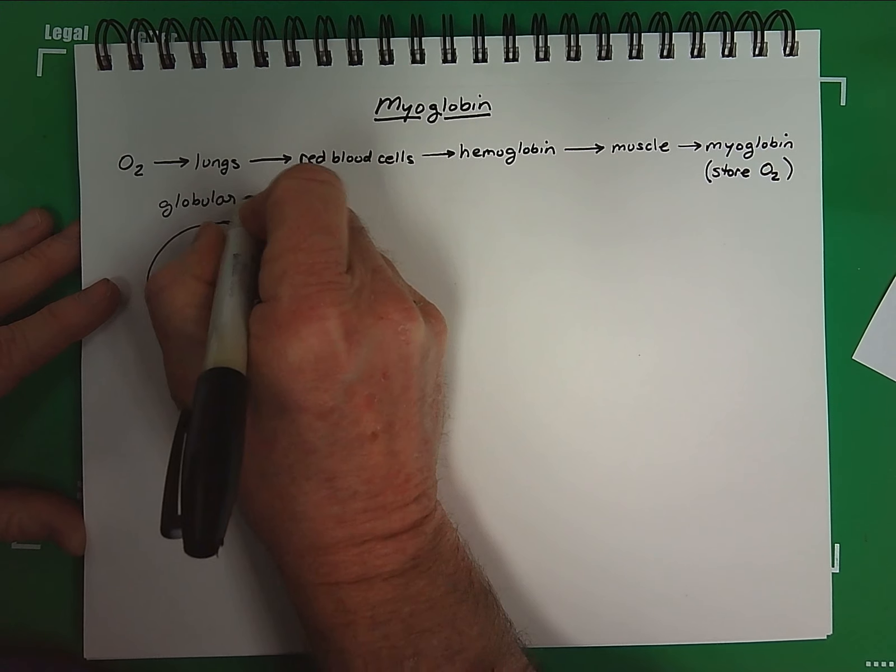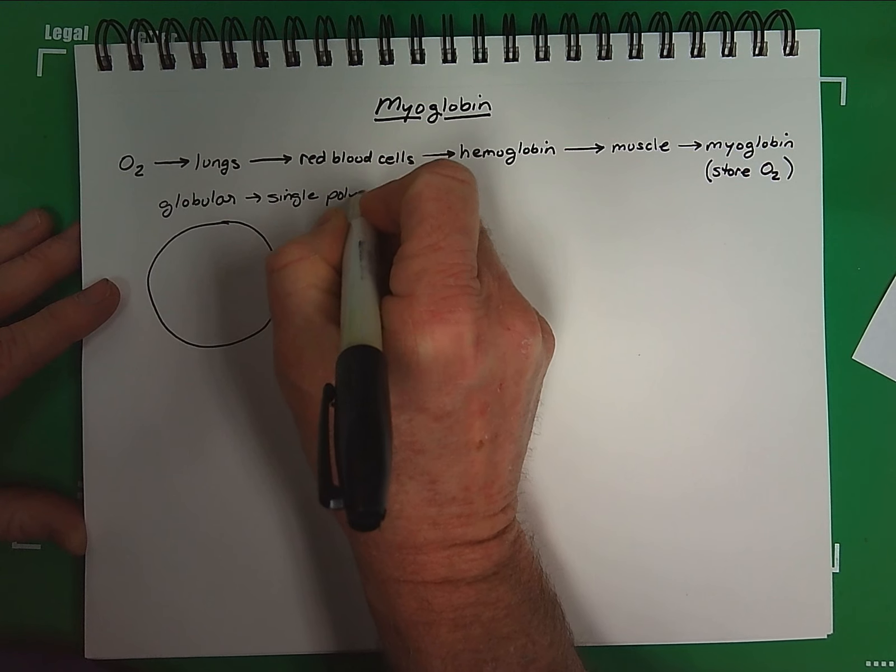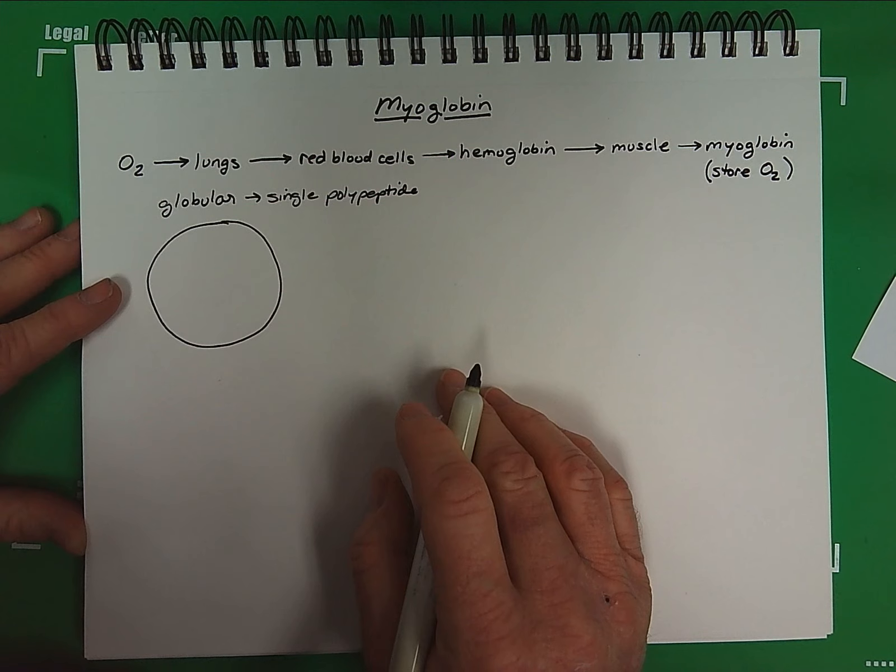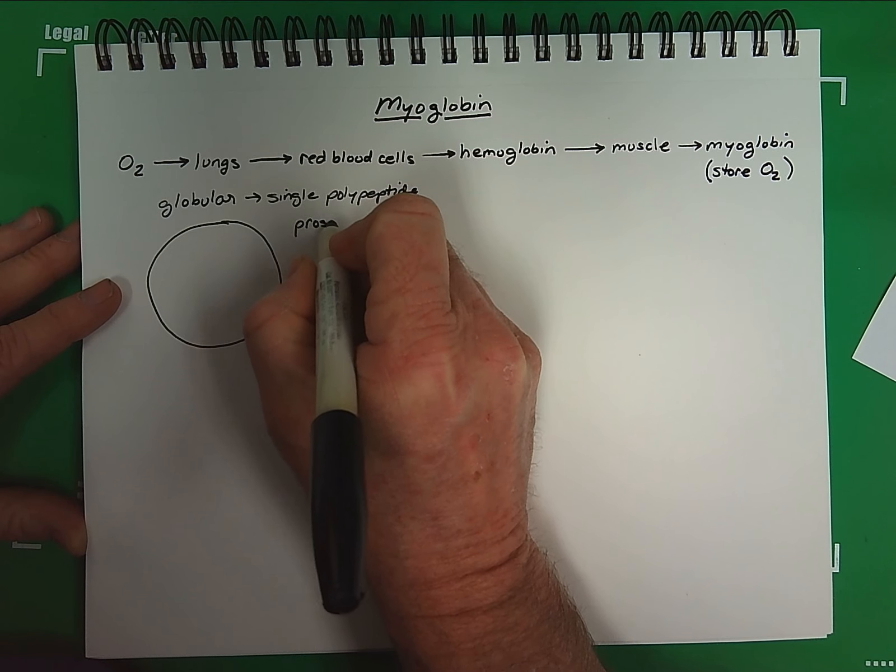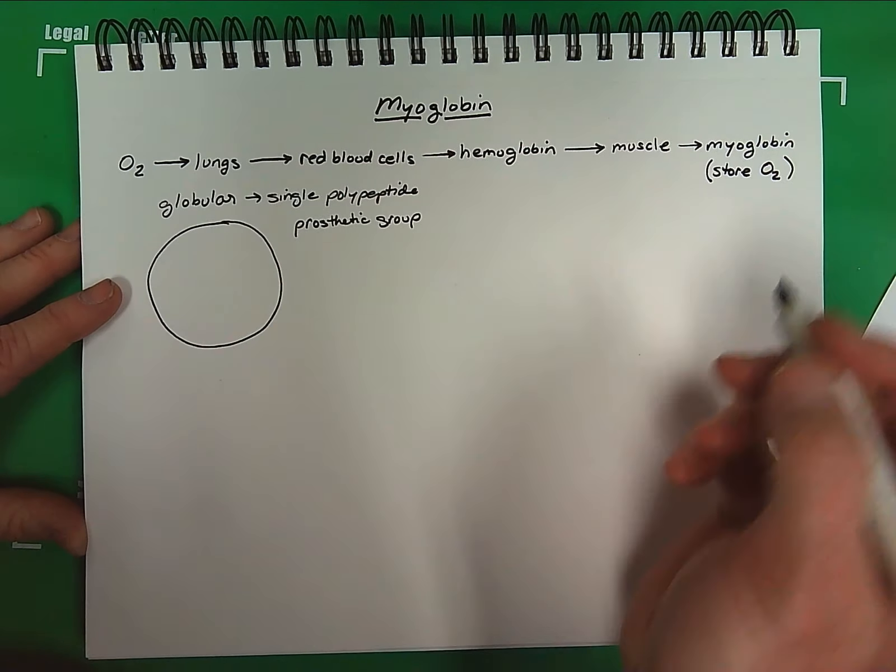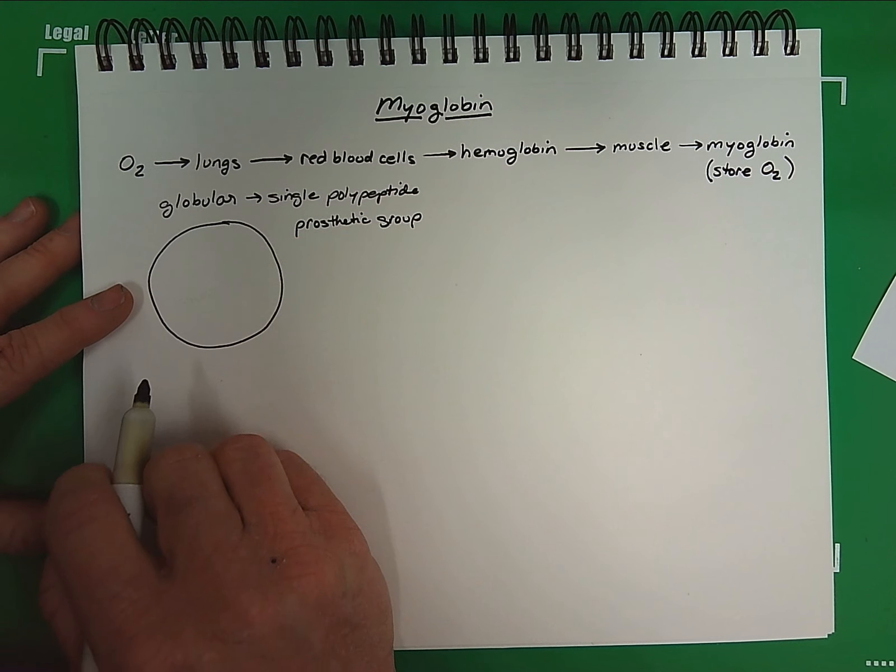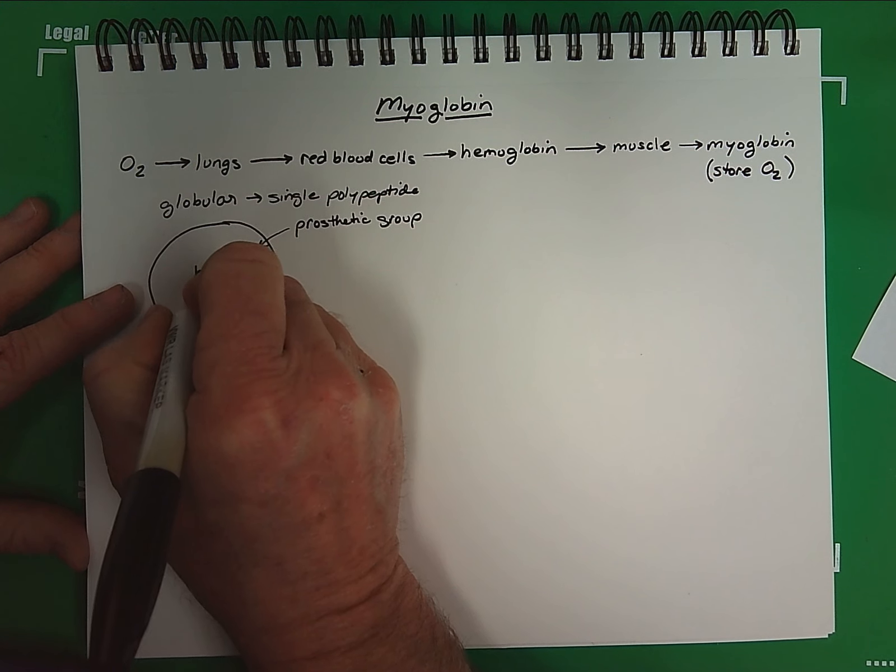Being a single polypeptide, it has the storage capacity for oxygen bound to what's called a prosthetic group. So the oxygen that binds to the molecule, the protein of myoglobin, is not actually binding to the protein itself. It's binding to a prosthetic group, which is called heme.